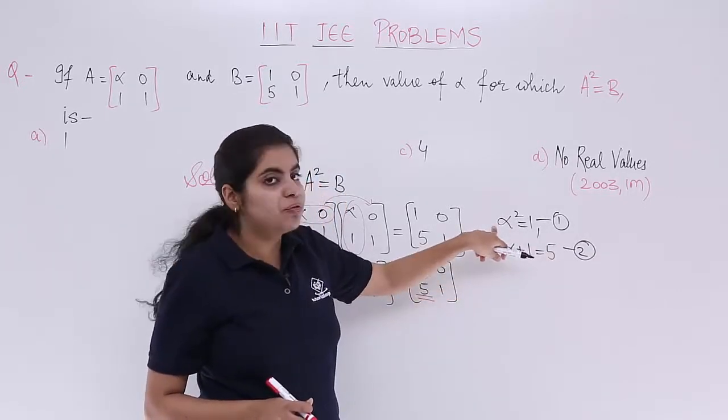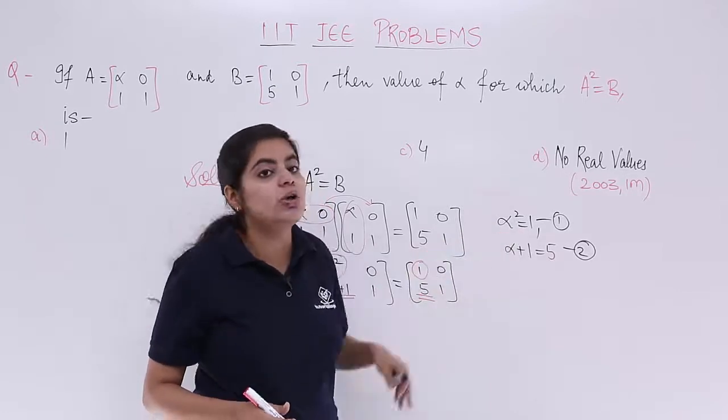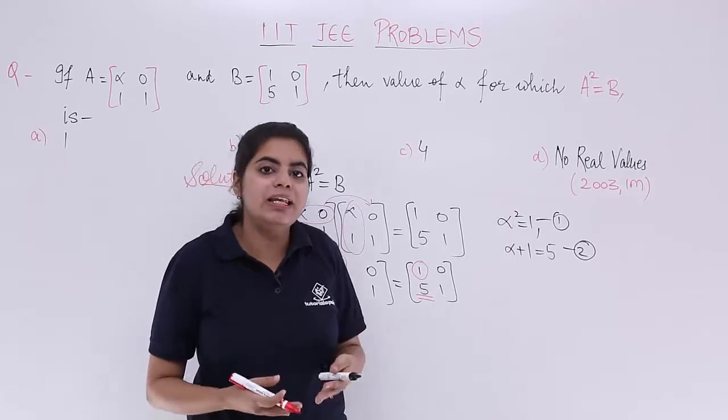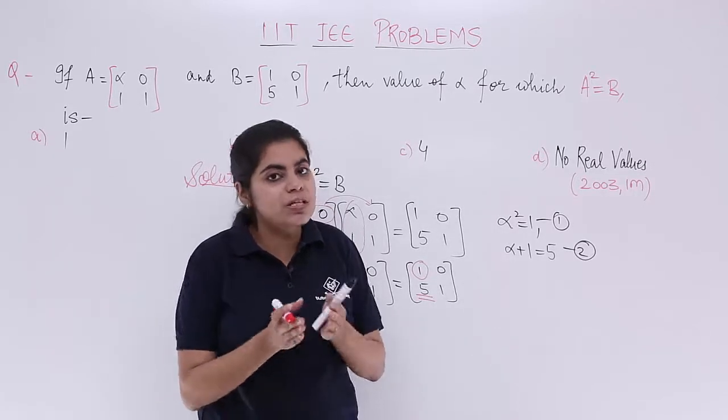But if you put that 4 value here, 4² = 16 and it is not equal to 1. So at any time, you don't have any real value which satisfies both the equations.